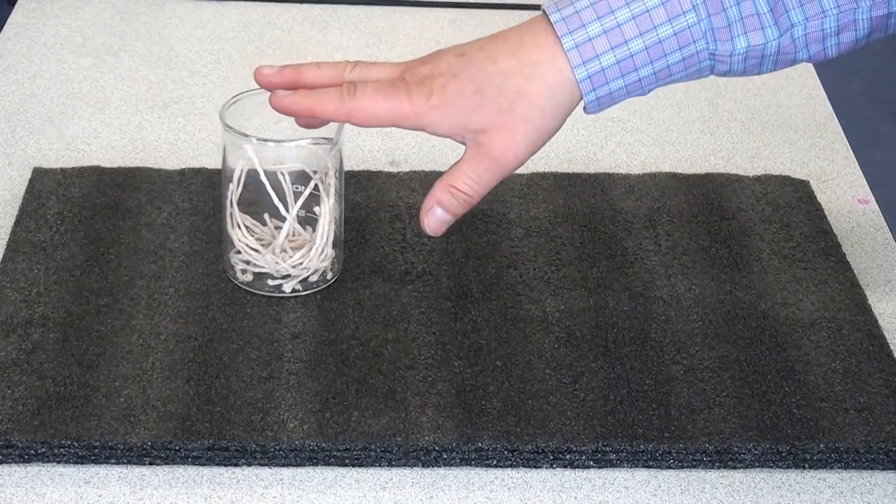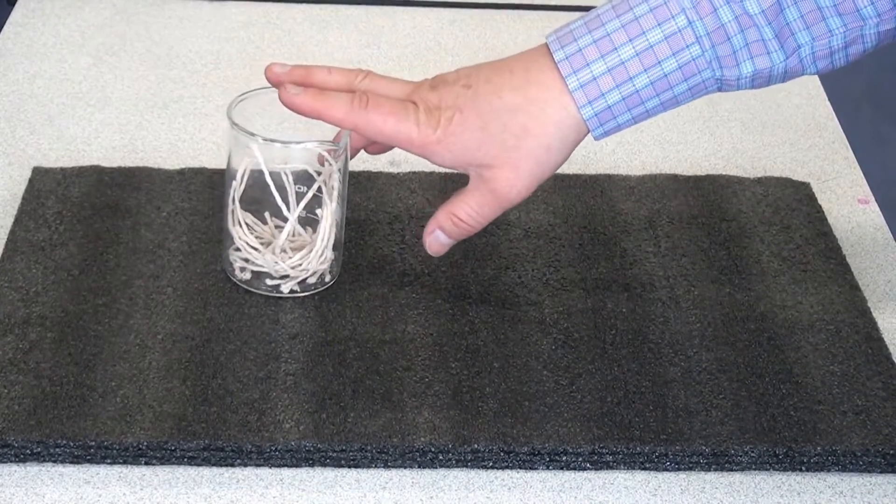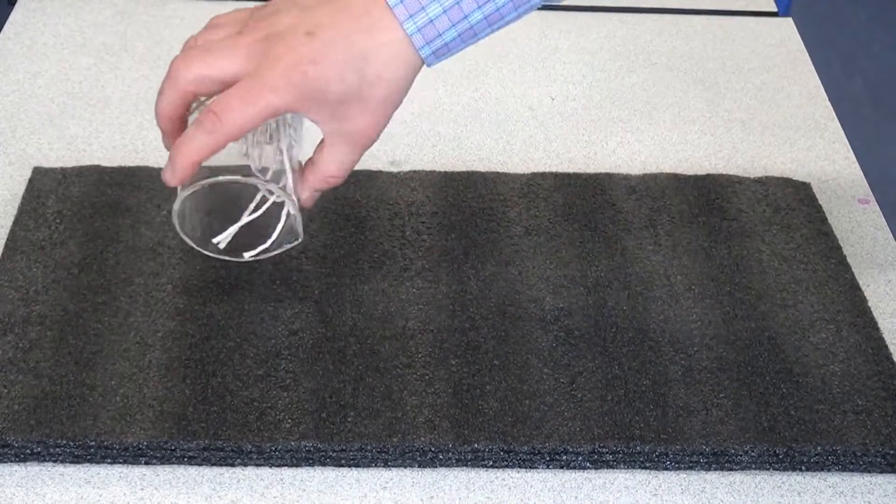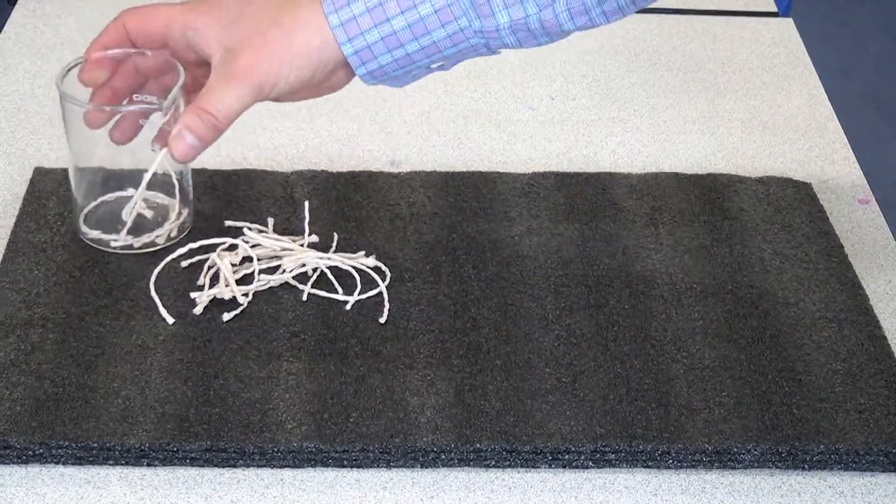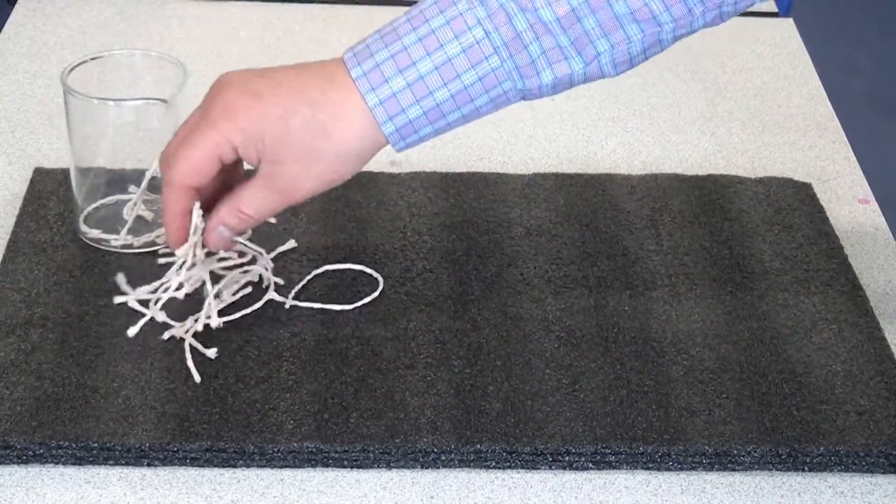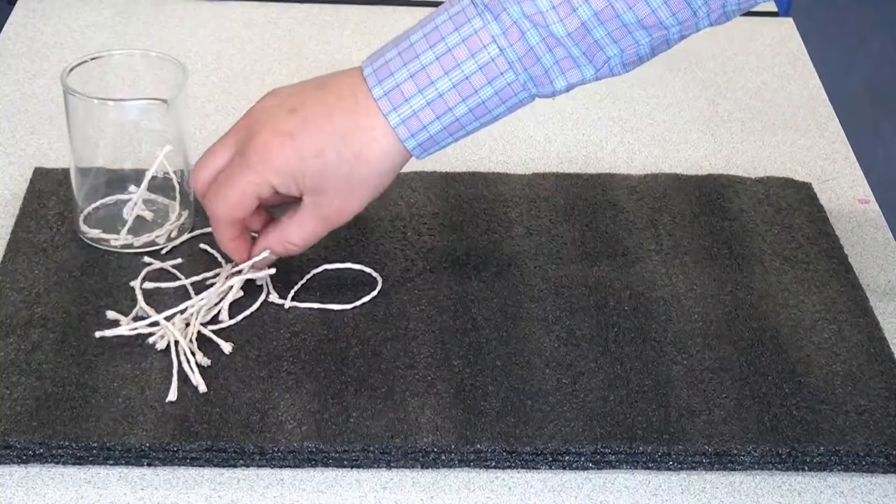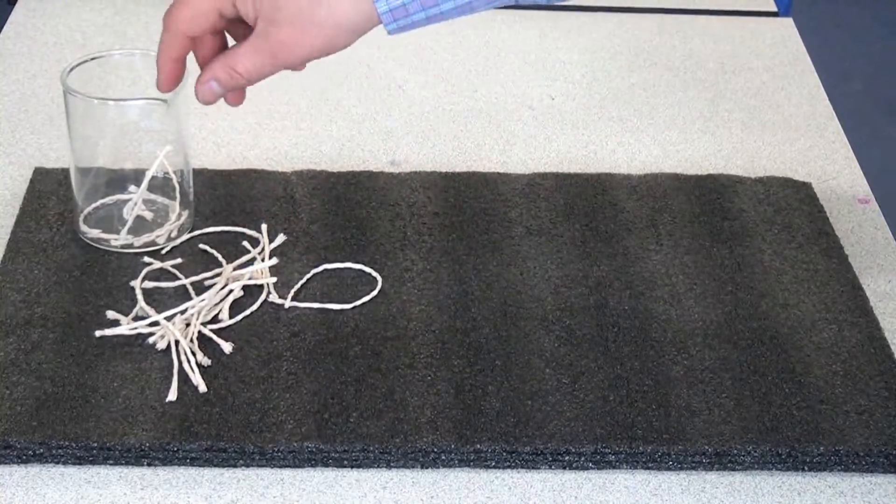So I've got a bit of string here, which is trying to model what the molecules are like inside crude oil. So if I tip this out, the string is supposed to be the hydrocarbon molecules, and we can see that there's all sorts of different sizes of hydrocarbon molecules. They might range from only one carbon atom long to over 100 carbon atoms long.